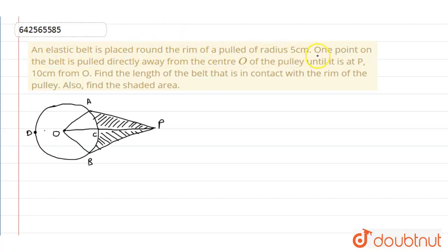An elastic belt is placed round the rim of a pulley of radius 5 centimeter, so OA is 5 centimeter. One point on the belt is pulled directly away from the center O of the pulley until it is at P.